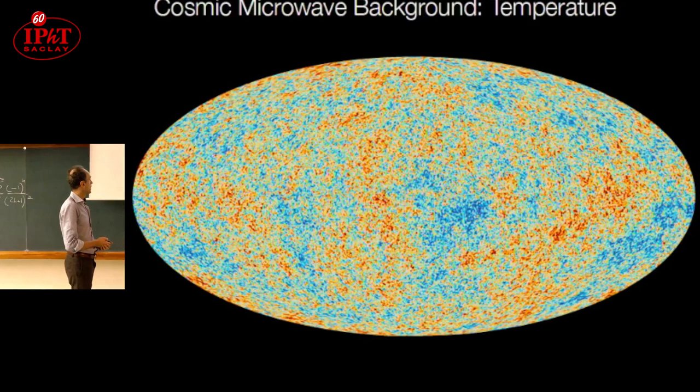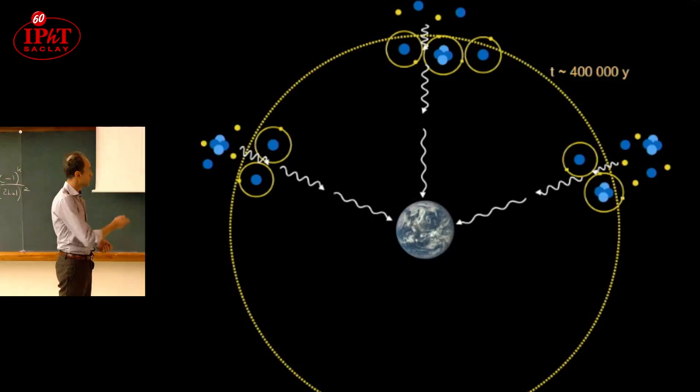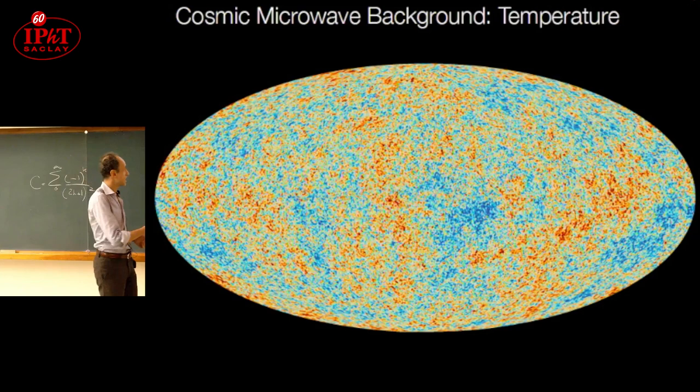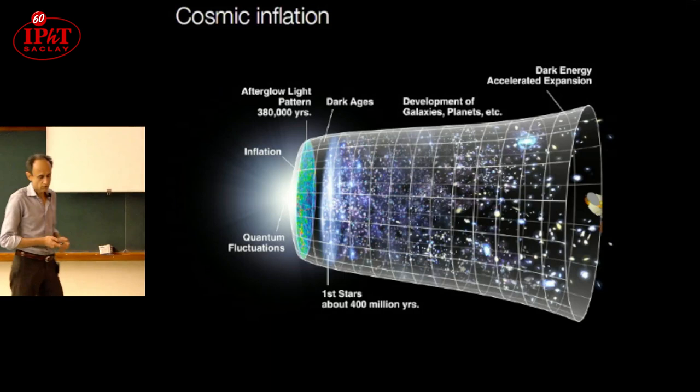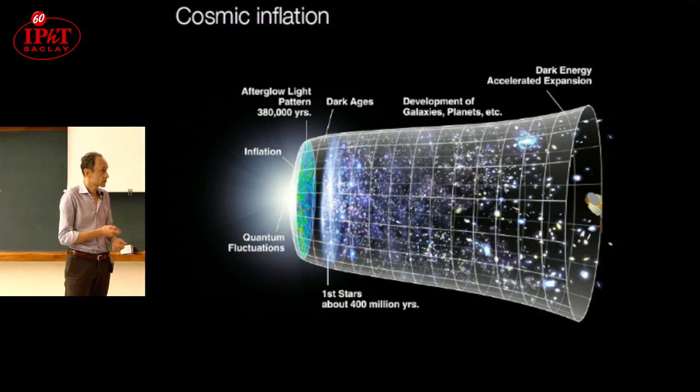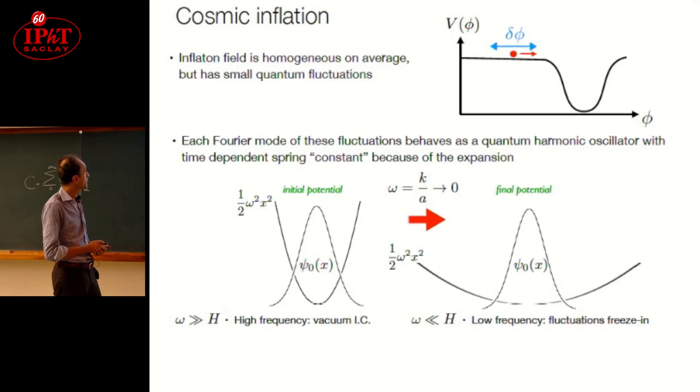There is a model which explains both why the universe is so much homogeneous, because these particular locations of the universe where these photons came from were not in causal contact in principle, and why it has tiny fluctuations. This is inflation. It's one of the models, probably the most compelling model at the moment, which basically assumes that the universe was dominated by a phase of accelerating expansion, similar to what we observe today. This phase was driven by supposedly one scalar field called the inflaton that was on average homogeneous but also had some quantum fluctuations, like everything.